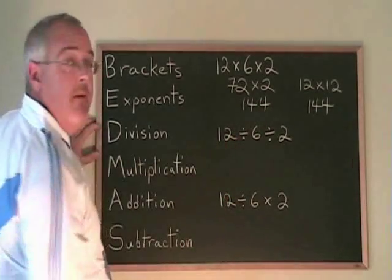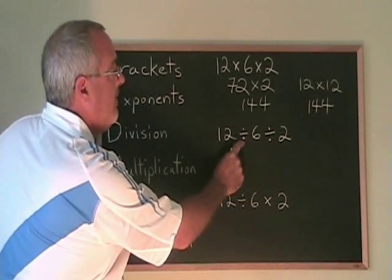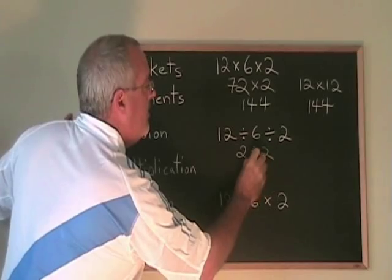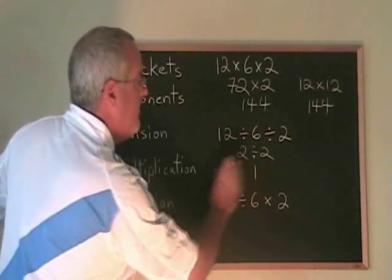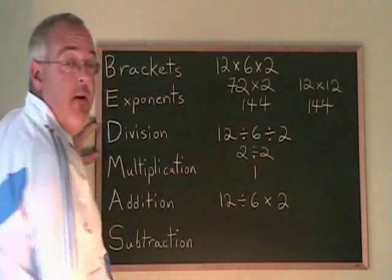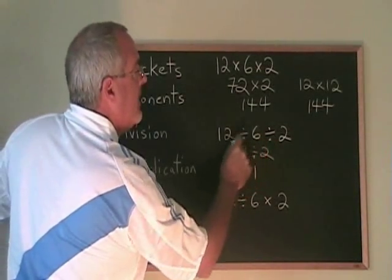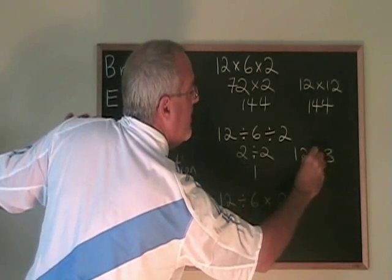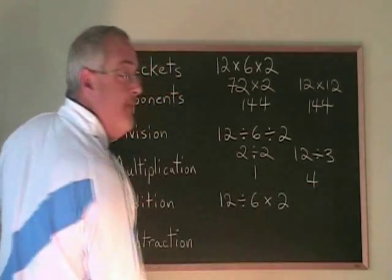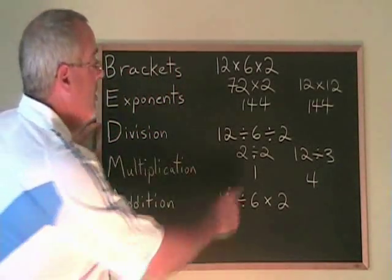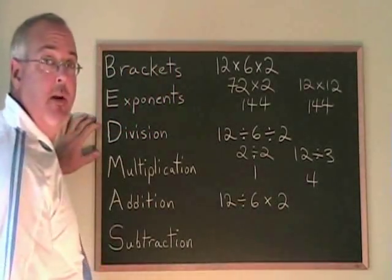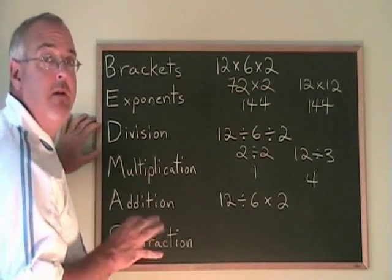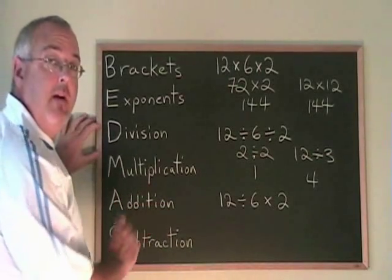What about division signs? If we do the first one first, 12 divided by 6 is 2, and 2 divided by 2 is 1. If we do the second divided-by first, 6 divided by 2 is 3, and 12 divided by 3 is 4. We get two different answers — just like with two minus signs. So division signs, like minus signs, introduce something tricky, and we have to be careful how we apply our rule.